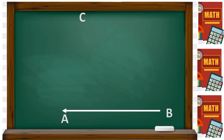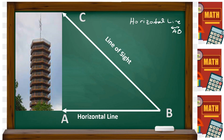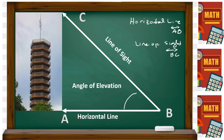We have here a tower. This is your horizontal line, which is line AB. Your line of sight is line BC. This is an angle of elevation because it is above. The angle of elevation here — you're just going to write the name of the angle — it's angle ABC.